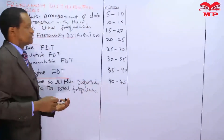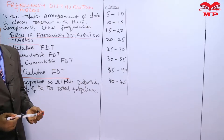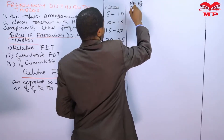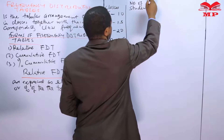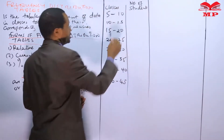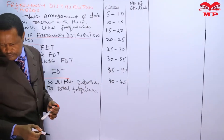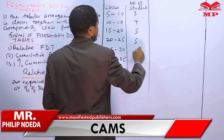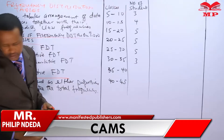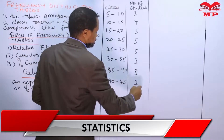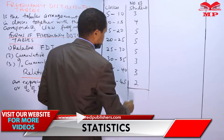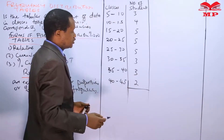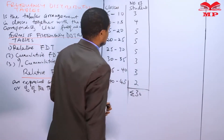Then the frequencies — that is the number of students — for each class were: 3, 4, 5, 5, 5, 3, 3, 2. This was our last illustration where we prepared a frequency distribution table. This gave us a total of 30.